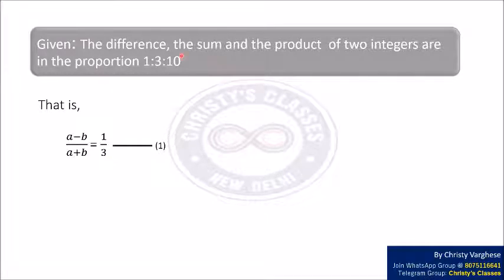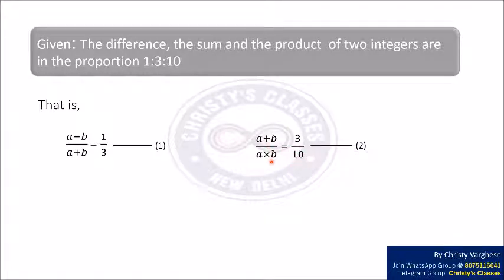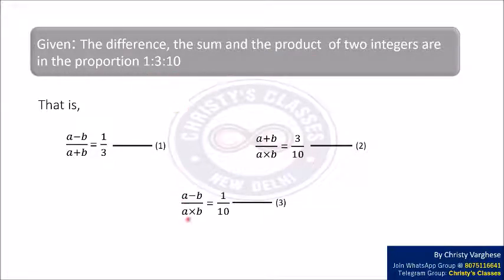And also from this, we can say that the sum and the product are in the proportion 3 is to 10, and we can write this as A plus B by A into B equal to 3 by 10. A plus B is the sum and A into B is the product, and they are in the ratio 3 is to 10. And also from this, we can say that the difference and the product are in the proportion 1 is to 10, and we can write this as A minus B by A into B equal to 1 by 10.